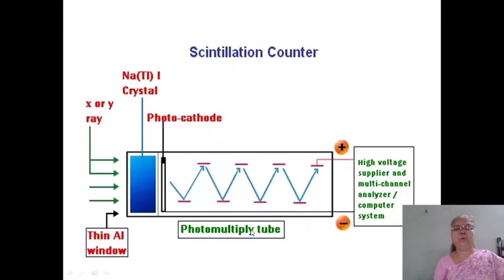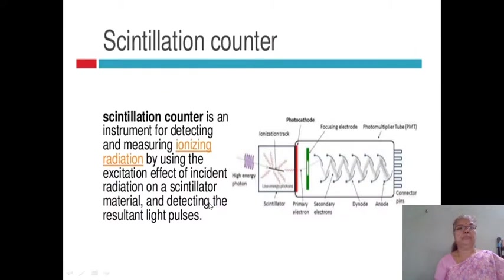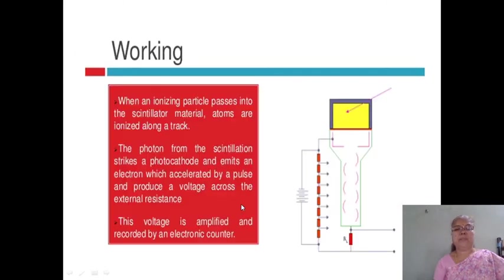As rays incident on the radioactive material, photons are produced. From the cathode, photons get multiplied in the ratio of 1 to 5 and so on. This is the scintillation counter. The working of the scintillation counter is described as follows.